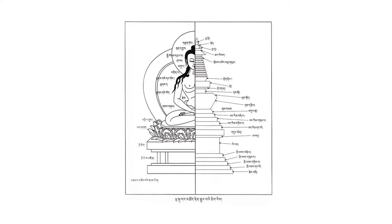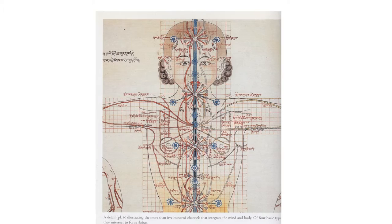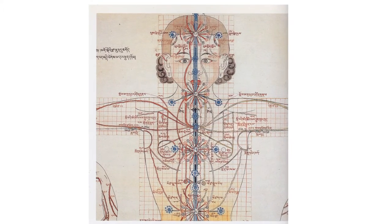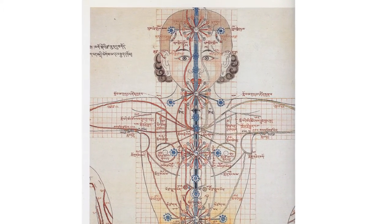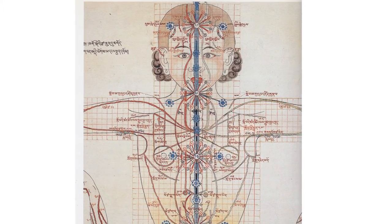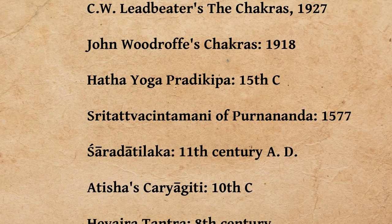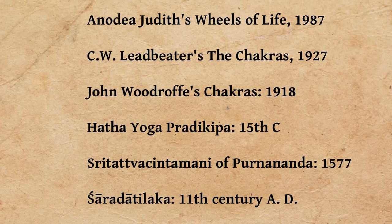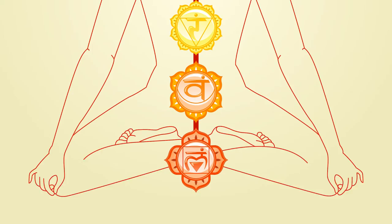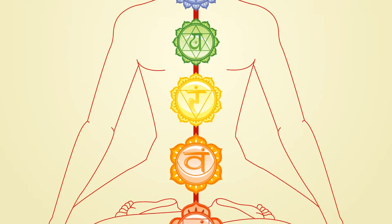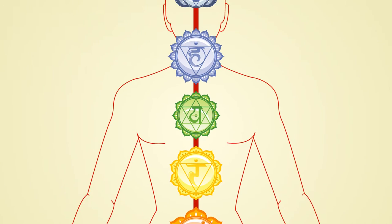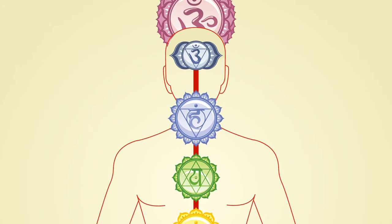The five elements can be related to the body via the chakra system, which was first documented in the Hevajra Tantra, came through the Hatha Yoga Pradipika, and has become well known in the seven chakra system taught today.